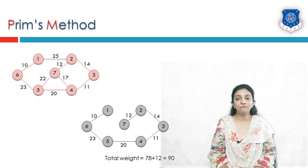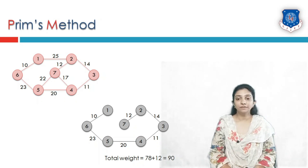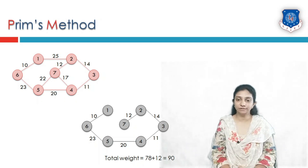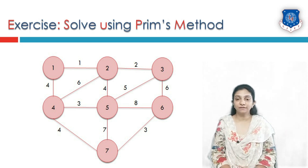We have now completed all vertices with none left, so we stop Prim's method here. This is how Prim's method works. You must draw the minimum spanning tree and mention its total weight. For practice, there is one exercise given with 7 vertices and specified edge weights. Your goal is to find the minimum spanning tree.